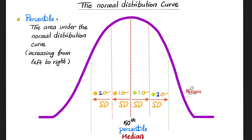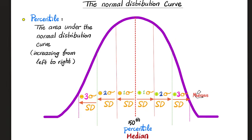So this is the mean, and this is one standard deviation above the mean, and this is one standard deviation below the mean. Two standard deviations above the mean, two standard deviations below the mean. Three standard deviations above the mean, three standard deviations below the mean. And it's going to look like this. Again, the 50th percentile is right smack in the middle.